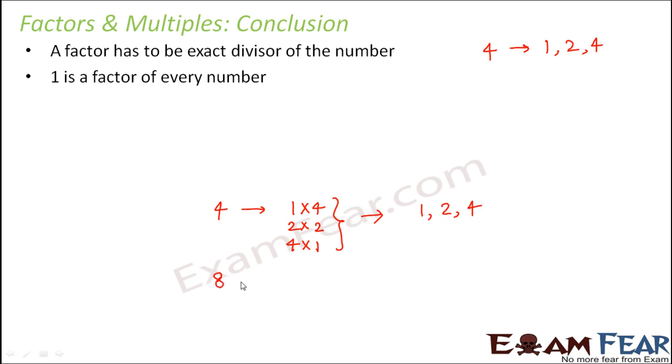Similarly, think of a number like 8. So 8 can be written as 1 × 8, 2 × 4, 4 × 2, 8 × 1. So basically looking at these you can say 1, 2, 4, 8 are the factors of 8. Now did you notice something that 1 is common for both of them? In fact, you consider any number, you consider 13, you consider 59, you consider 100, everywhere you would see that 1 is a factor because 1 divides every number.